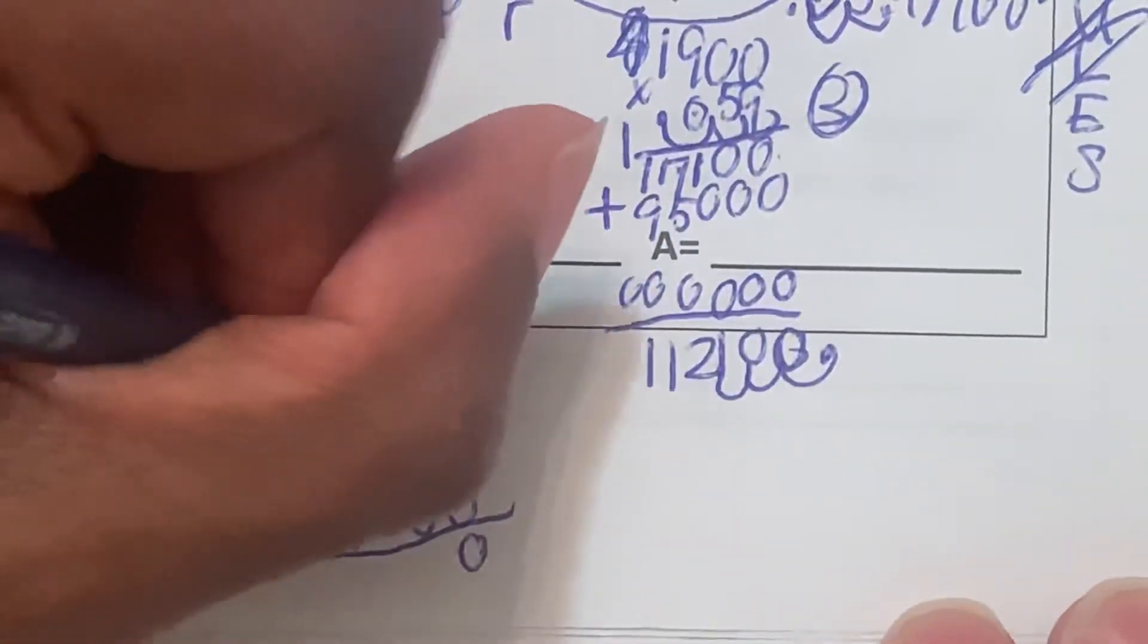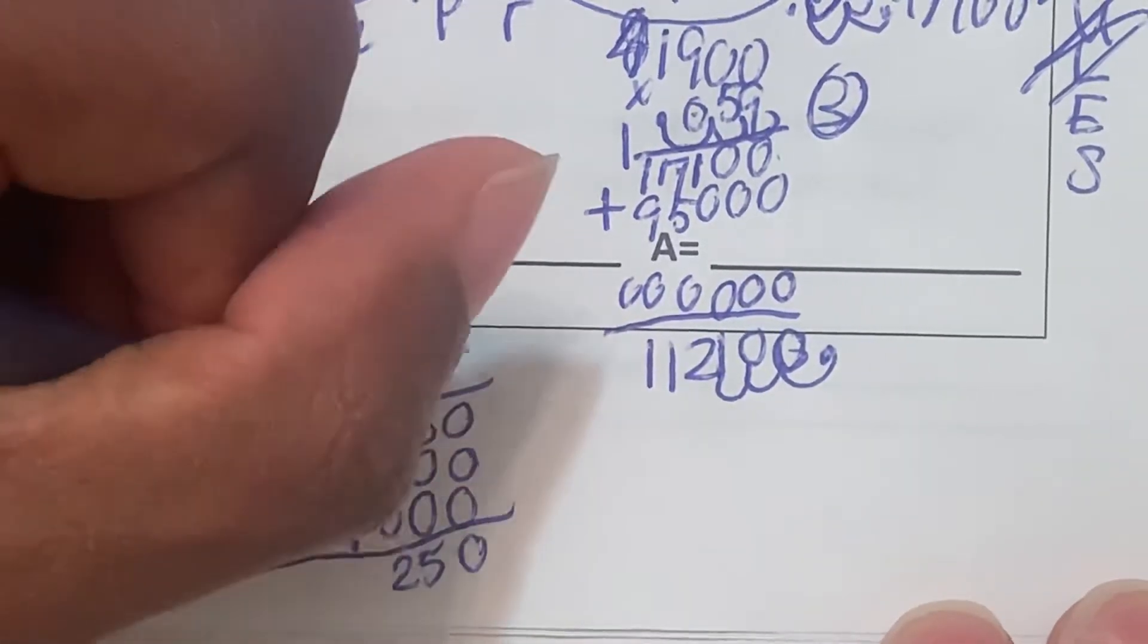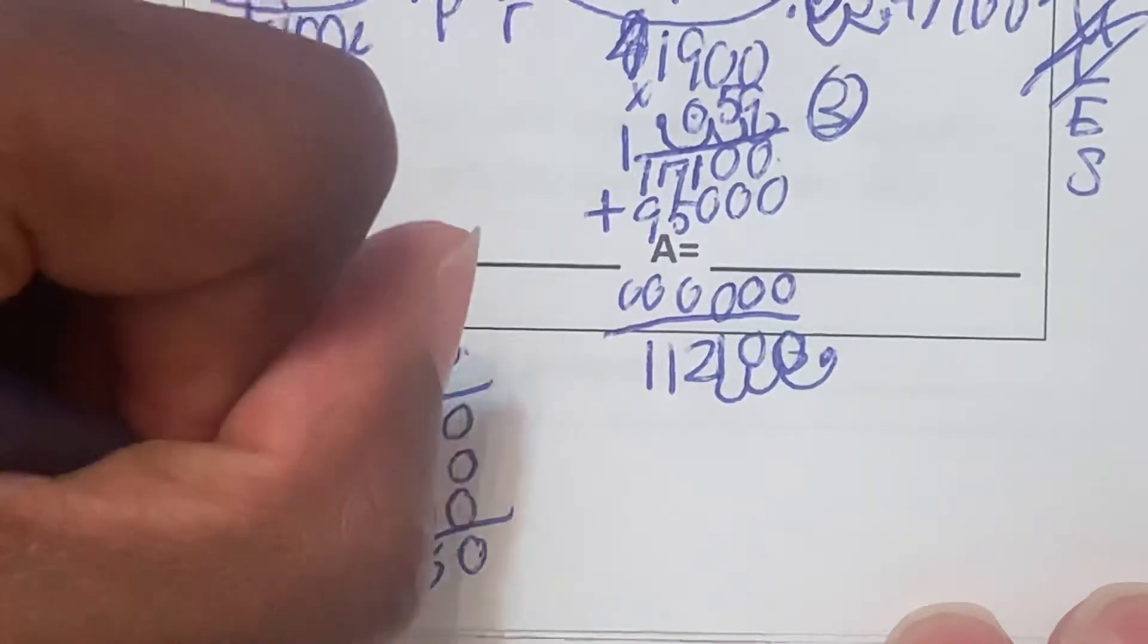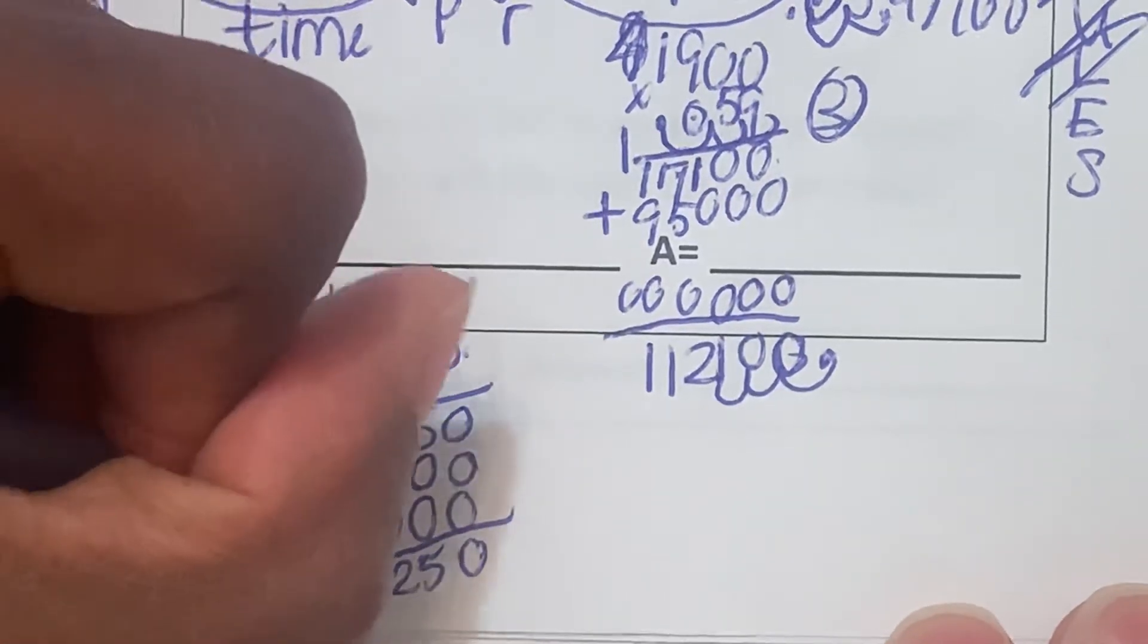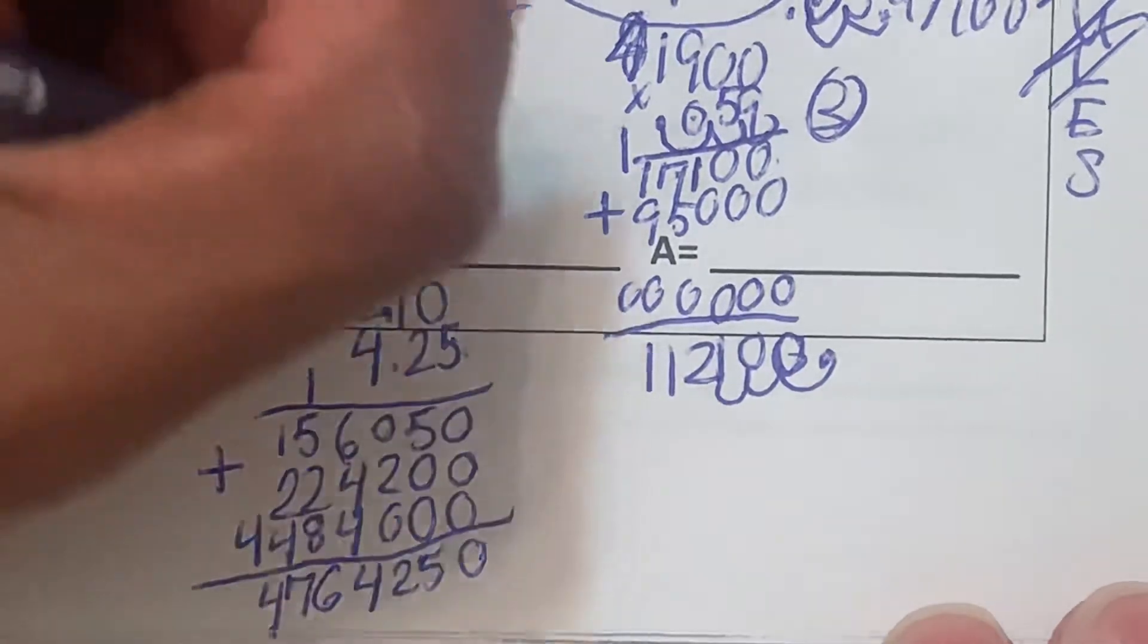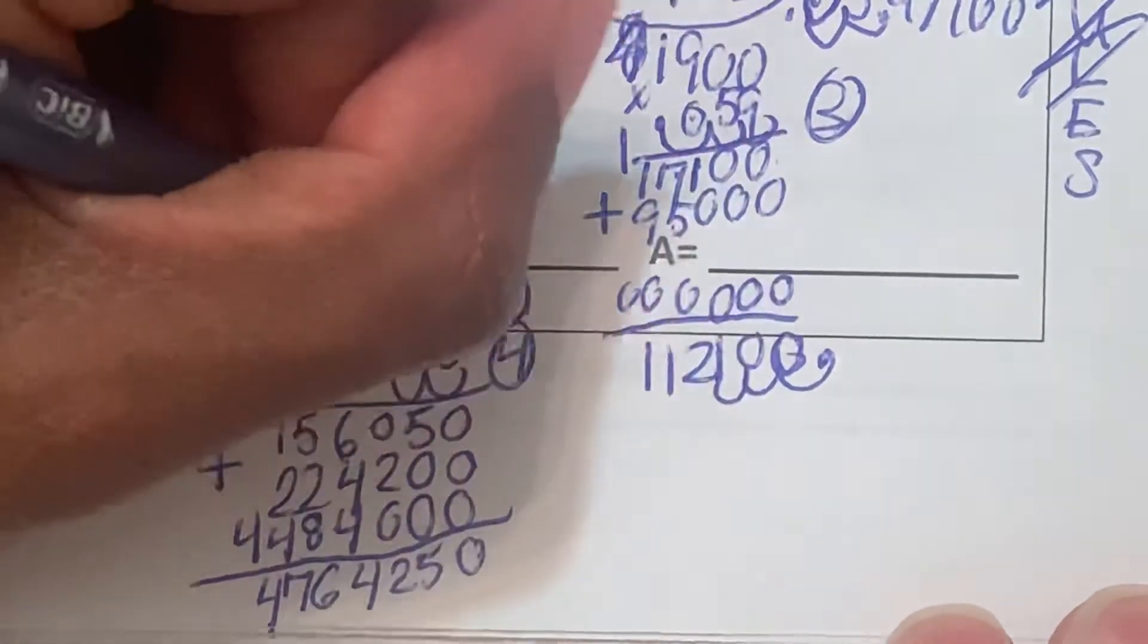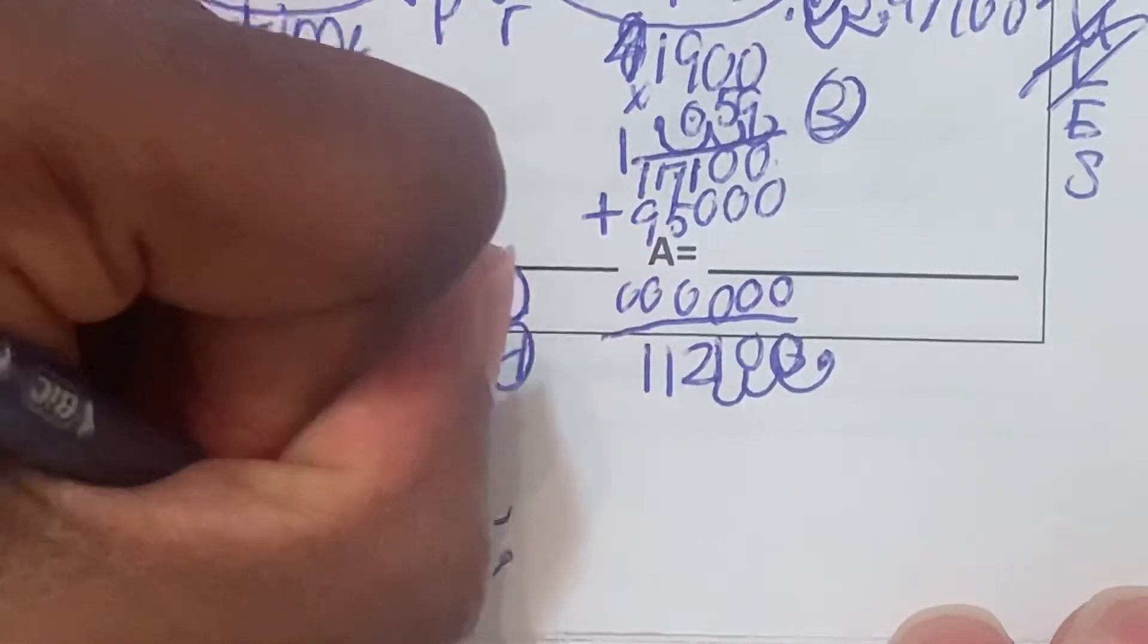Let's add these up. 0 plus 0 is 0, 5 plus the 0 is 5, 0 plus 2 is 2, 6 plus 4 plus 4 is 14, carry the 1. 5 plus 2 is 7, plus 8 is 15, plus 1 is 16, carry the 1. 1 plus 2 is 3, 3 plus 4 is 7. We have a 4 there. Now how many numbers do we have to write the decimal place? We have 1, 2, 3, 4. So we move our decimal towards the left 1, 2, 3, 4.